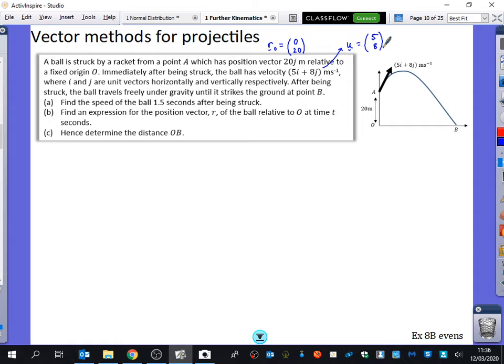Remember, you'd know how to do this one usually, because on the diagram we know it's going 5 across and 8 up. After being struck, the ball travels freely under gravity. If it travels freely under gravity, what can you tell me about its acceleration? 9.8 downwards. What is that as a vector?